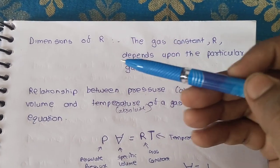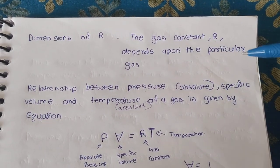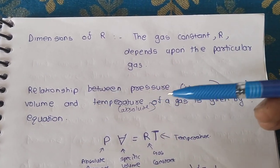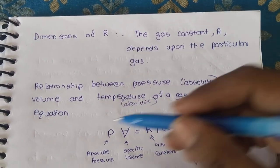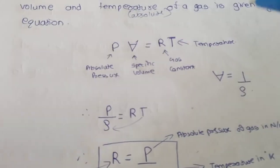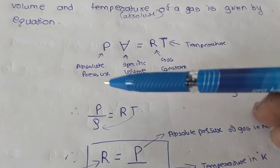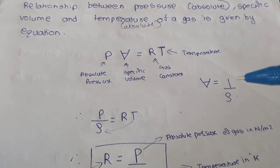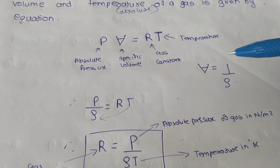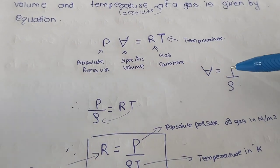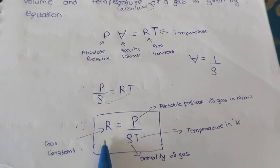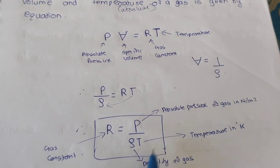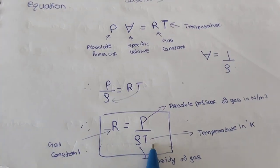The gas constant R depends upon the particular gas. The relationship between absolute pressure, specific volume, and absolute temperature of a gas is given by the equation: absolute pressure times specific volume equals gas constant times temperature. Since specific volume equals 1 upon density, we get R equal to absolute pressure divided by density into temperature.